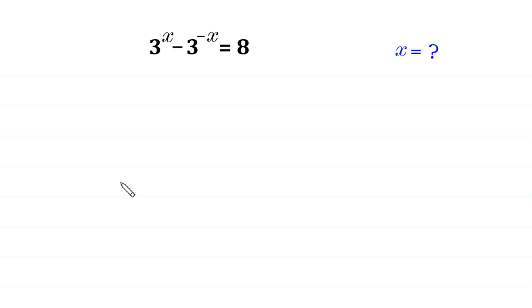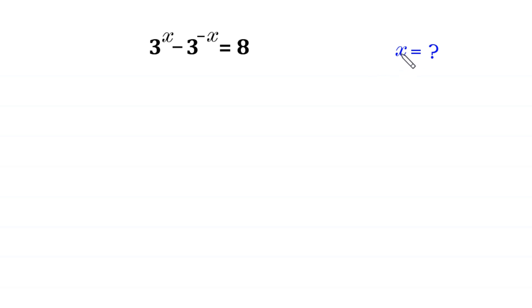Hello, welcome to how to solve this very nice exponential equation. 3 to the power x minus 3 to the power negative x is equal to 8. We need to find all possible values of x.